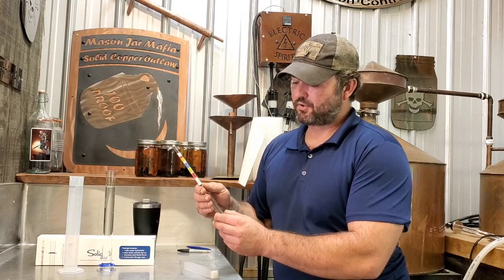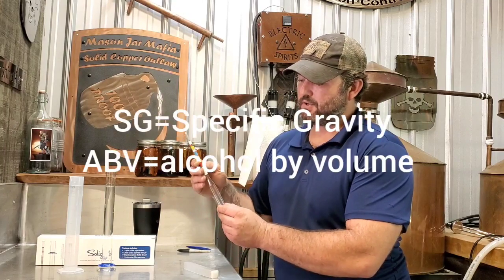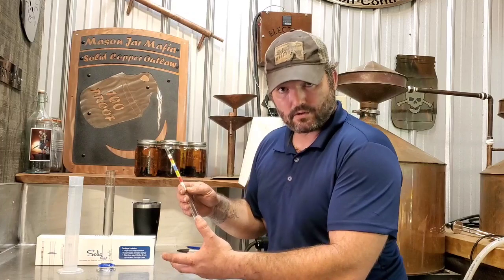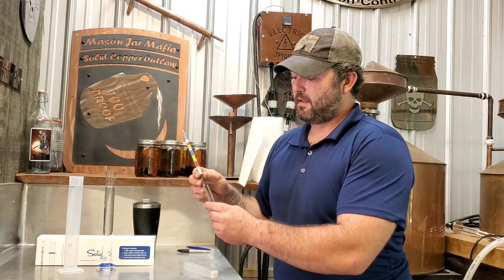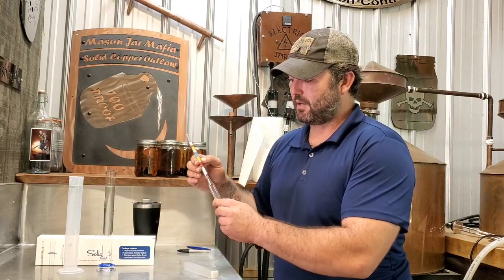So triple scale measures three things. It measures your SG, your specific gravity. It measures your potential alcohol by volume.